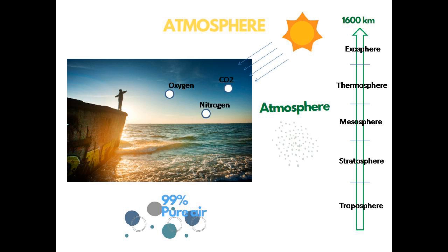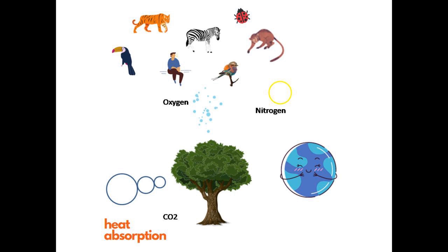99% of air was pure, but now due to pollution and global warming, there is a huge difference in its proportion. We need oxygen to breathe. Likewise, organisms need nitrogen for living. The carbon dioxide that we exhale is absorbed by plants and in return, they provide oxygen that we need. Therefore, we need plants for our survival. Also, carbon dioxide absorbs Earth's heat and keeps the Earth warm.